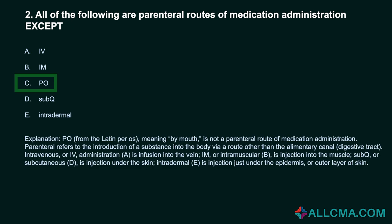PO, from the Latin per os, meaning by mouth, is not a parenteral route of medication administration. Parenteral refers to the introduction of a substance into the body via a route other than the alimentary canal, or digestive tract. Intravenous (IV) administration is infusion into the vein. IM, or intramuscular, is injection into the muscle. Sub-Q, or subcutaneous, is injection under the skin. Intradermal is injection just under the epidermis, or outer layer of skin.